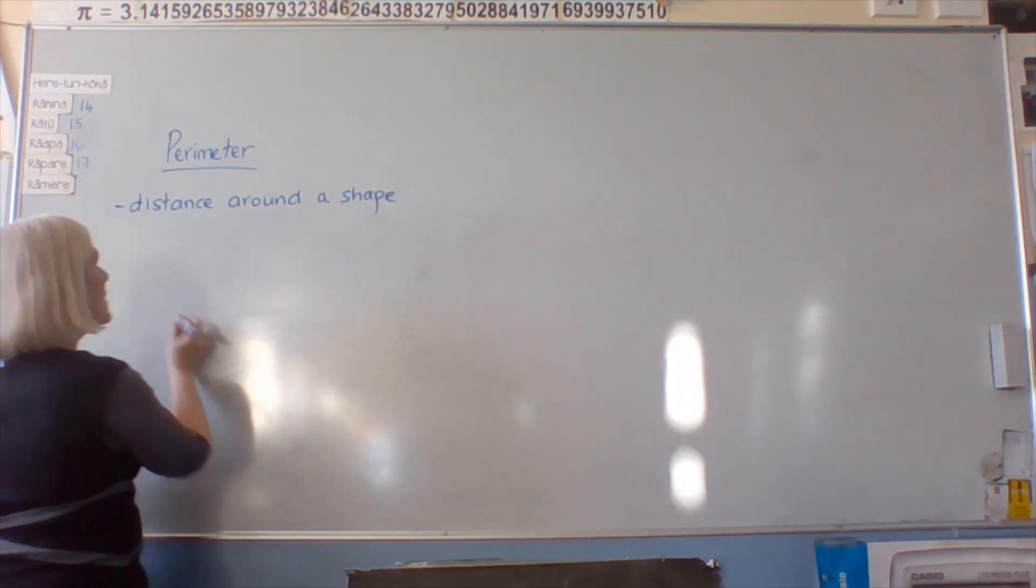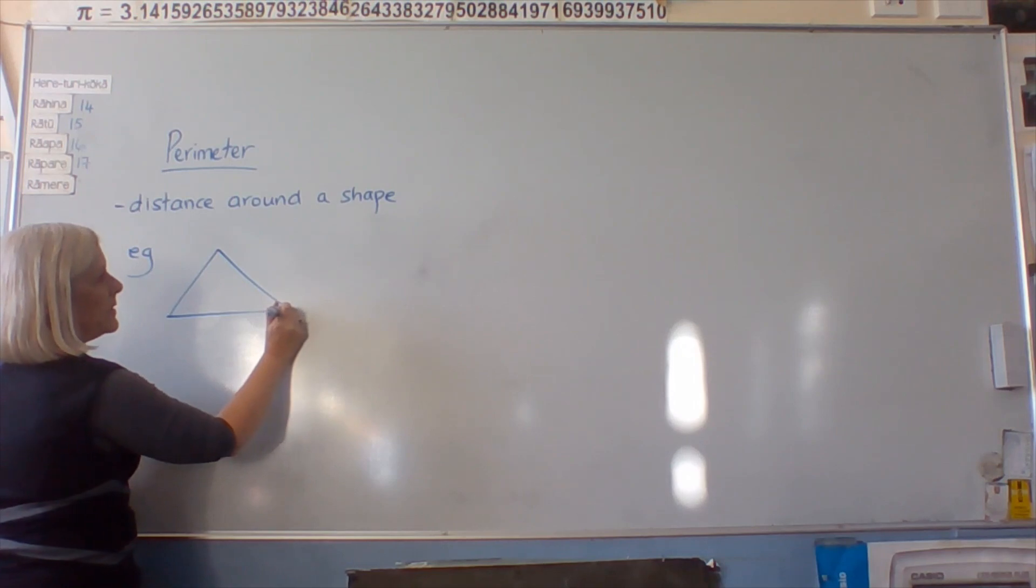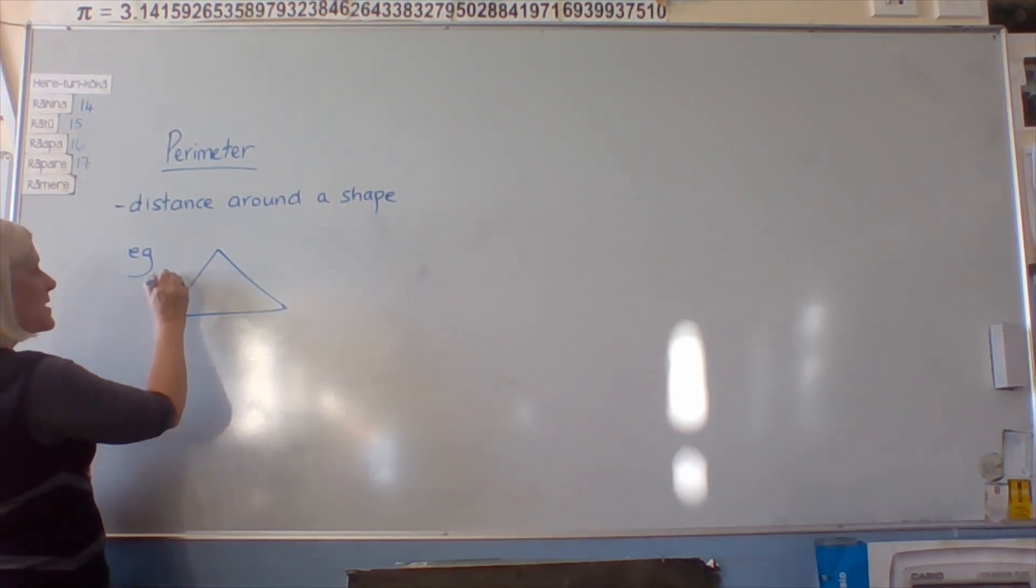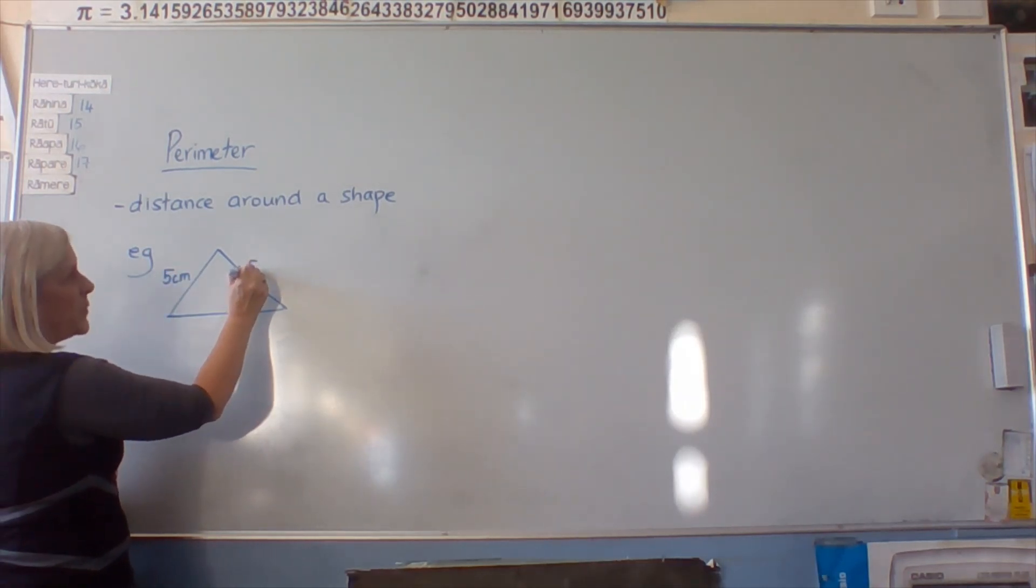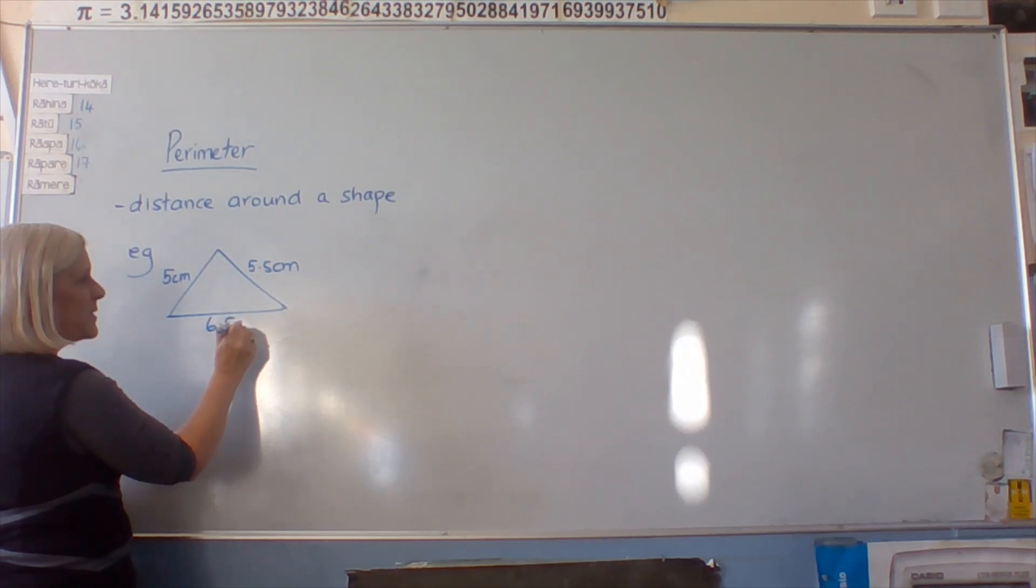Okay, so if we had a really basic one like a triangle, not any specific sort of triangle, and we have this side is 5 centimetres, this side is 5.5 centimetres, and this side is 6.5 centimetres.